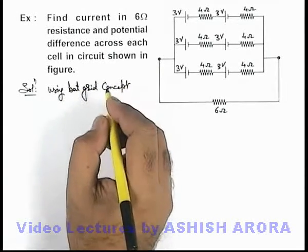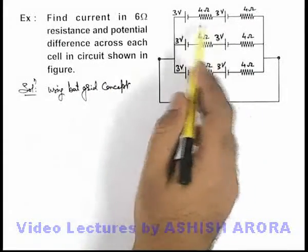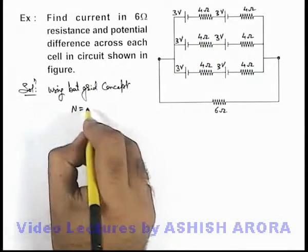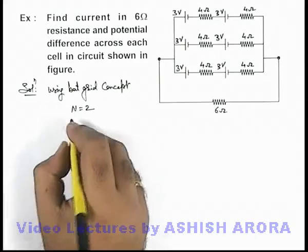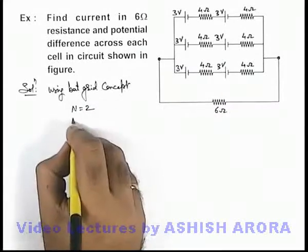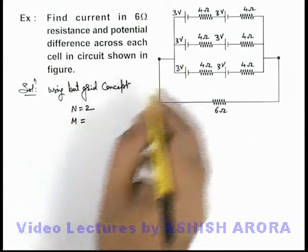Here we can see there are 2 cells connected in series combination, then N can be taken as 2, and there are 3 rows connected in parallel, so M we can take as 3.